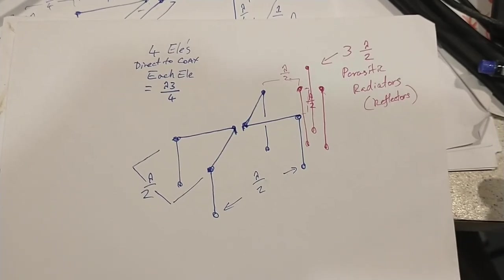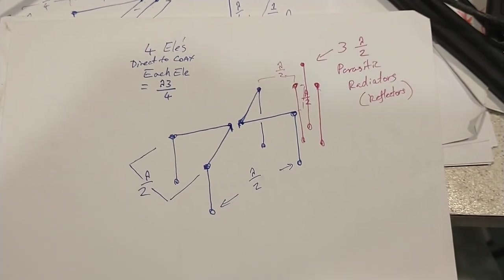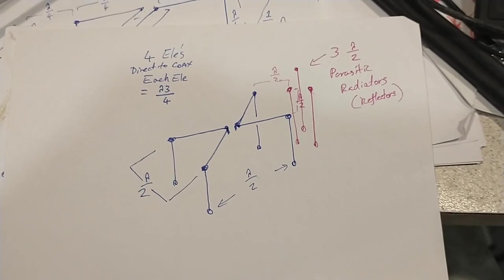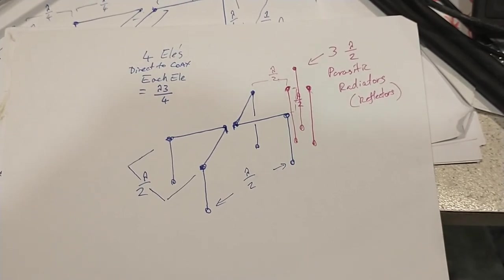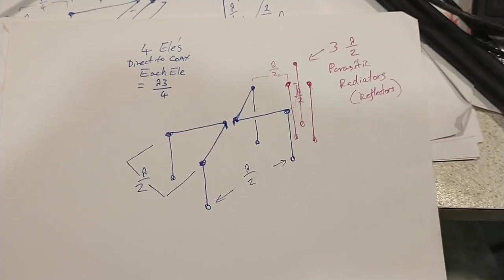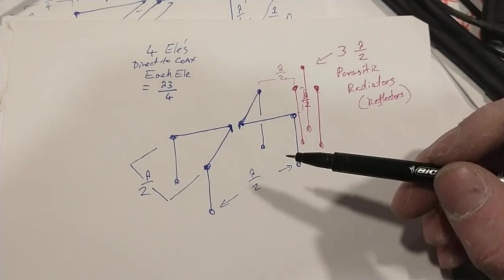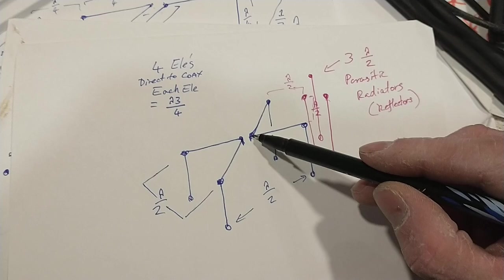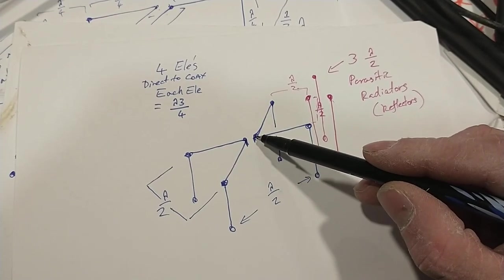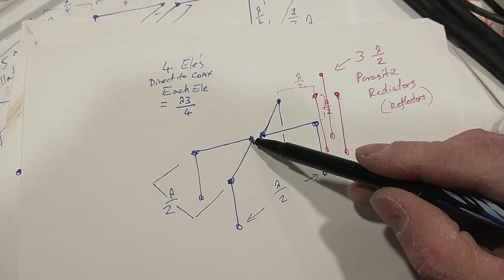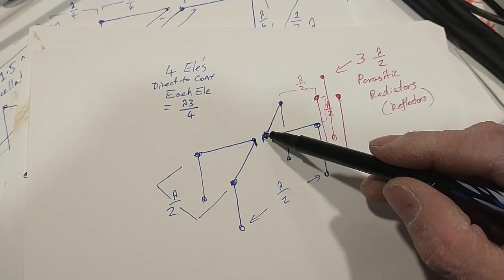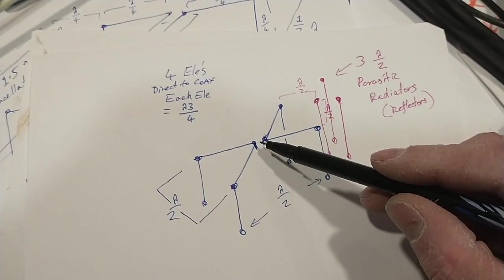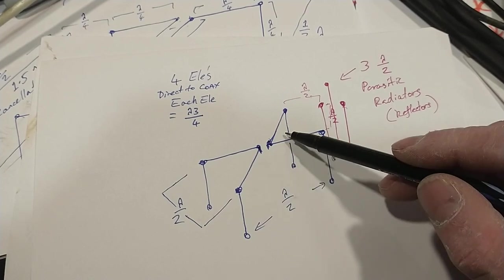In this video, I want to explain how the Moxon phase vertical beam array actually works, keeping it really simple. These two points are the feed point of the antenna, where I'd be connecting my coax. This is one side of the transmission line, and this is the other side.